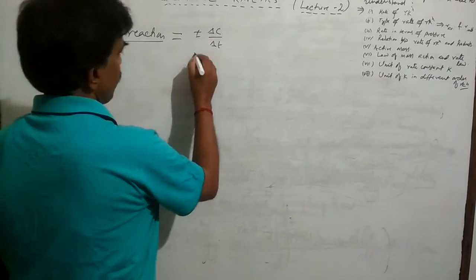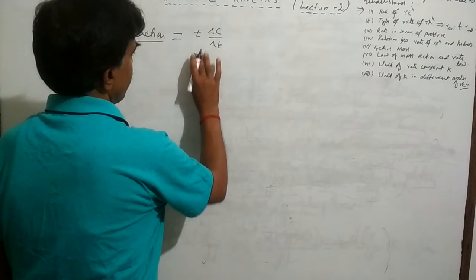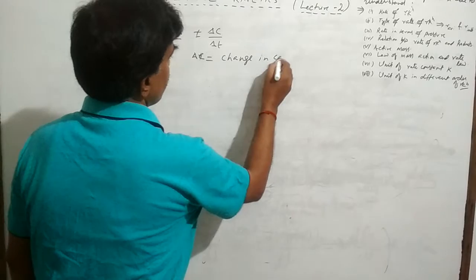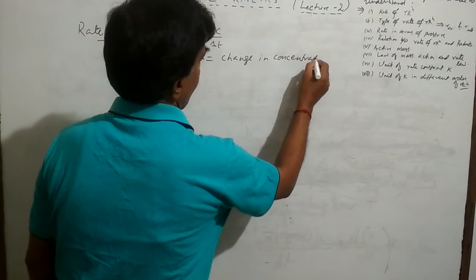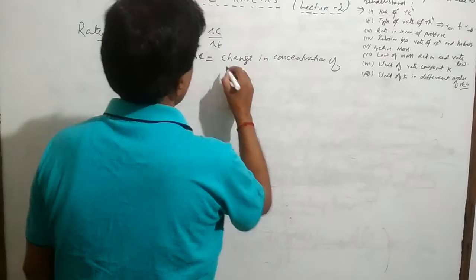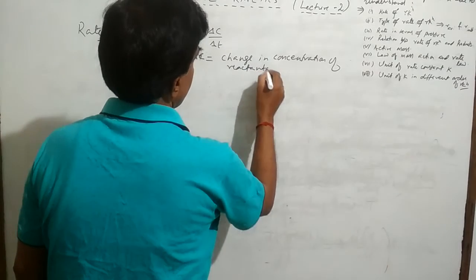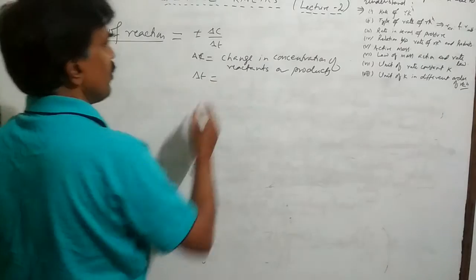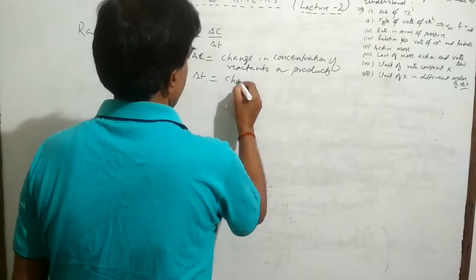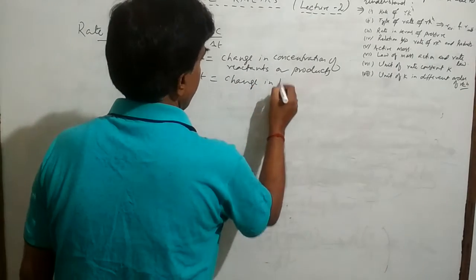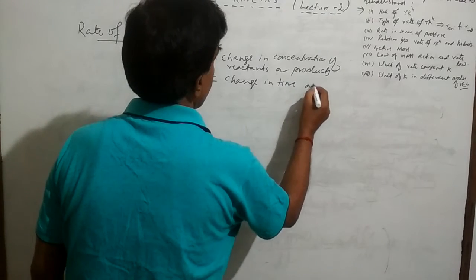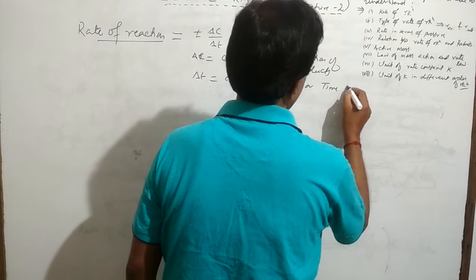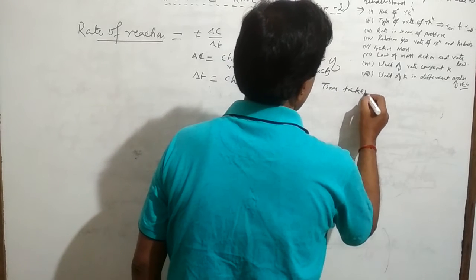Where delta c is the change in concentration of reactants or products, and delta t is the change in time, or time taken for change in concentration.